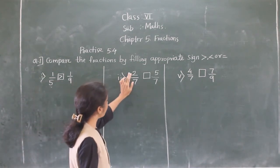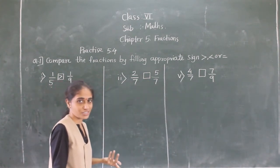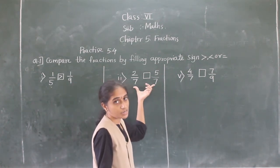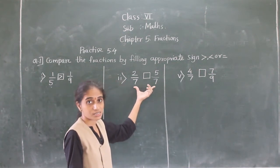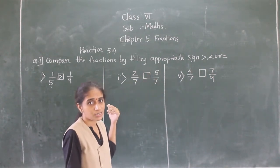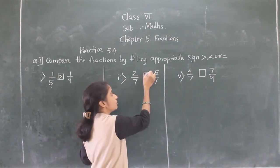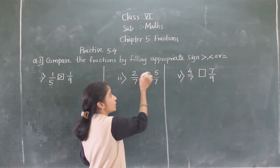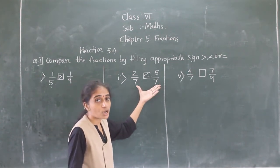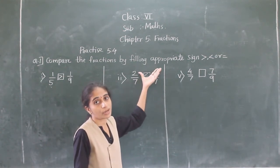Next: 2 upon 7 and 5 upon 7. These fractions are like fractions because their denominators are the same. So we just compare the numerators. 5 is greater and 2 is smaller. We compare numerators because the denominators are the same.